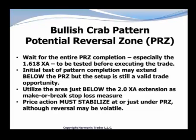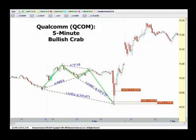This first chart — Qualcomm on a five-minute — really exemplifies the nature of the crab. Clearly, we had an extreme decline as the pattern was completed. On this intraday chart, the price action sold off sharply, tested all the numbers in the zone, but primarily we're focused on looking to buy the stock at or just below that 1.618 XA leg.